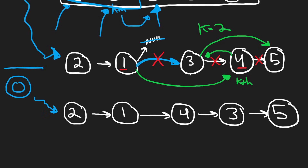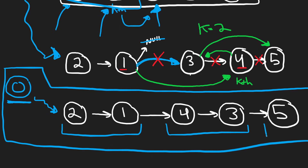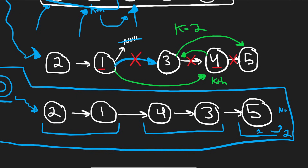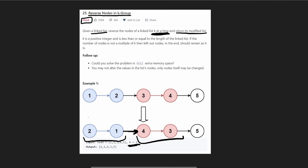So these pointers can get complicated and messy, so let's redraw it. This is what our linked list looks like now — we still have our dummy node, we reversed the first group, we reversed the second group. Now let's look at the third group. We try to get the kth node — we want the second node — but it's null, so the kth node doesn't even exist. This group is too small, so we're finished. We got 2, 1, 4, 3, 5 — which is exactly what we have in the output.